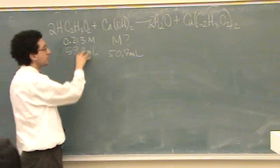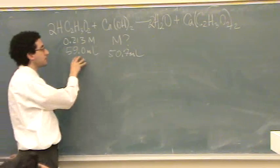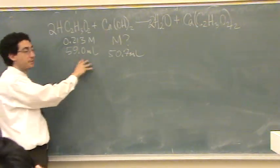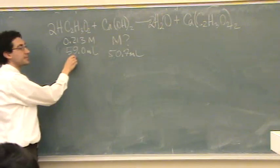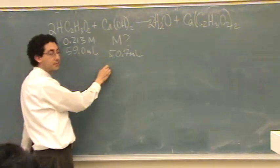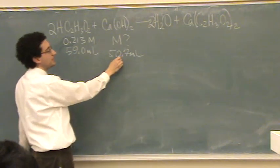So, in titrations, once you write down this information, you just start with what you know. So, we'll start here and we'll go here. I'm going to convert this to moles, molar ratio, and then divide by this number to get molarity.